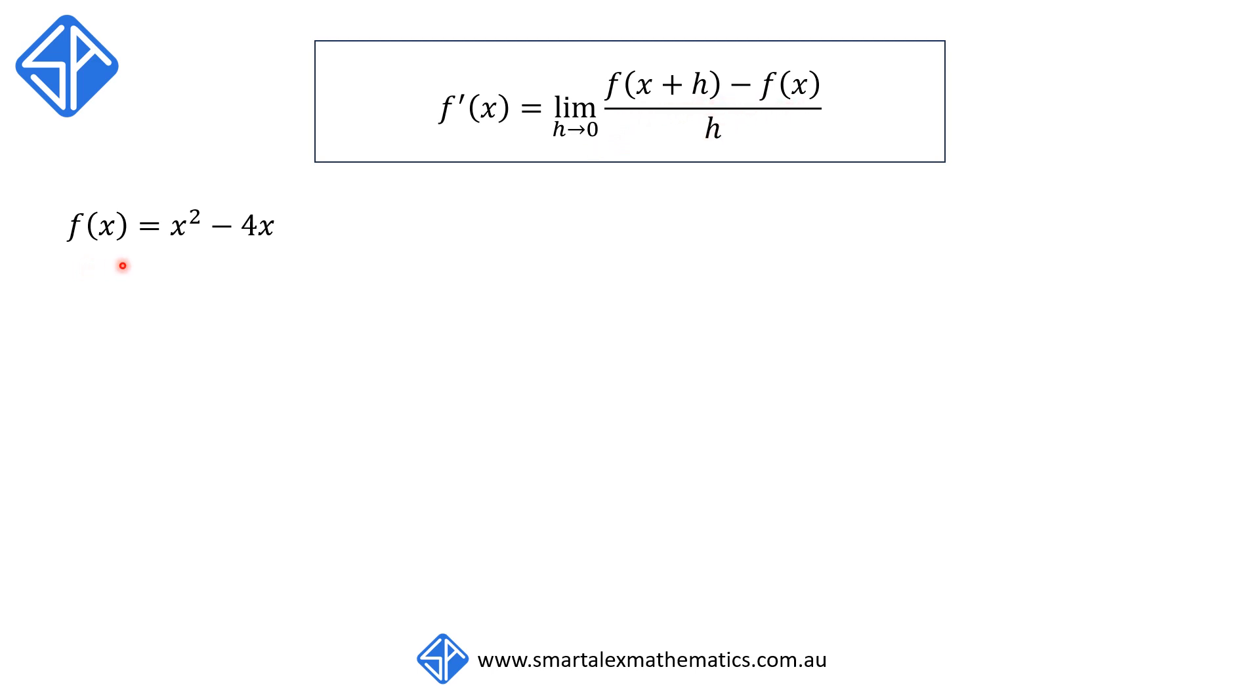Here we've got the function f(x) = x² - 4x. So what we're going to do first is work out an expression for f(x+h). And that's going to be equal to (x+h)² - 4(x+h). We're going to expand this,